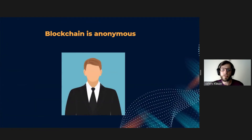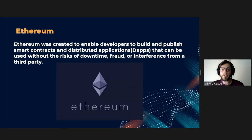Blockchain is anonymous. Even if you can see every single transaction on the blockchain, you don't need to provide any personal information like a name or an address. Cryptocurrency owners are given a public key, which is the address, and a private key, which is the password to send and receive cryptocurrency. The public address is where cryptocurrency is deposited and received, but you won't be able to make withdrawals or send cryptocurrency to another wallet without the private key.